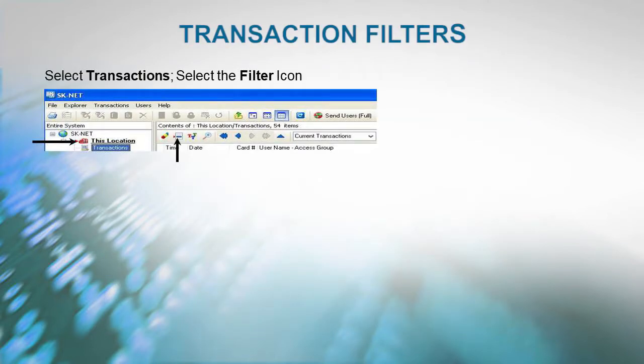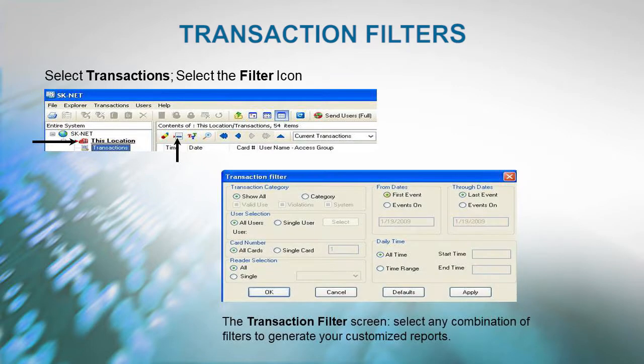Transaction Filters: First, select Transactions, then select the Filter icon. The Transaction Filter screen allows you to select any combination of filters to generate your customized reports.